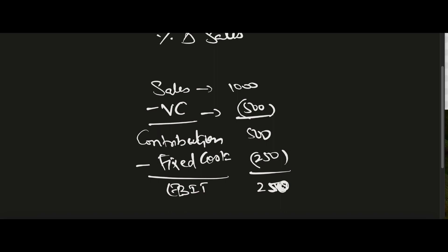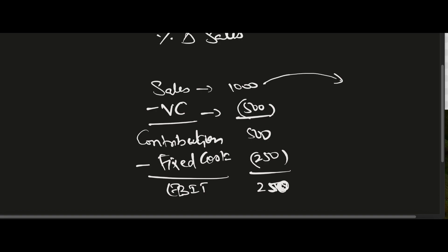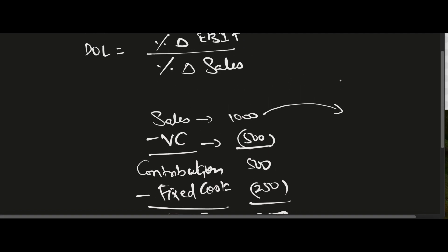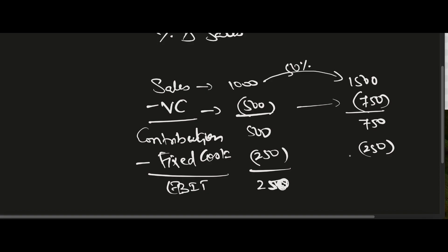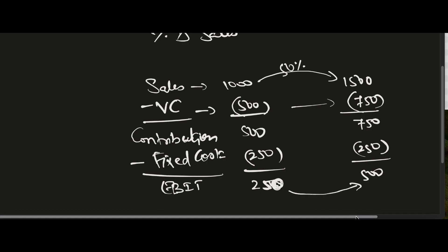Now let's say sales is increasing by 50%. The new Sales will be 1500. Variable Cost also proportionately goes up by 50%, so it becomes 750. That gives Contribution of 1500 minus 750 equals 750. Fixed Cost remains the same at 250, so the new EBIT is 500. Everything is proportionately going up except the fixed cost, so profit goes up highly.